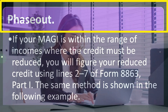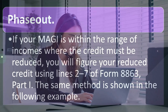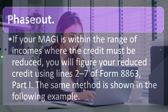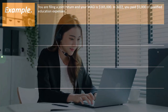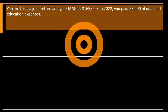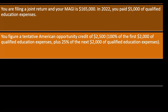Phase out: if your MAGI is within the range of incomes where the credit must be reduced, you will figure your reduced credit using lines 2 through 7 of Form 8863, Part 1. For example: you are filing a joint return and your MAGI is $165,000. In 2022, you paid $5,000 of qualified education expenses. You figure a tentative American Opportunity Credit of $2,500, because you paid more than the $4,000 maximum — 100% of the first $2,000 plus 25% of the next $2,000.